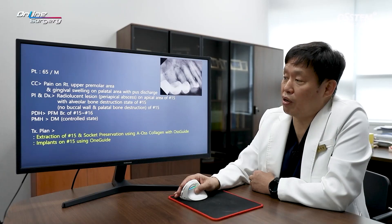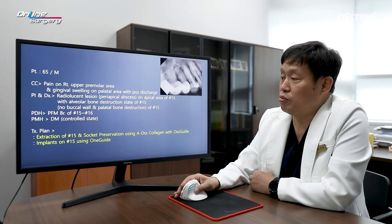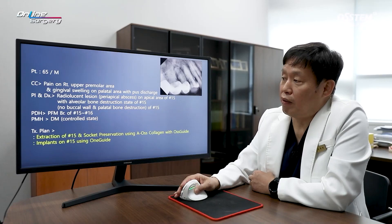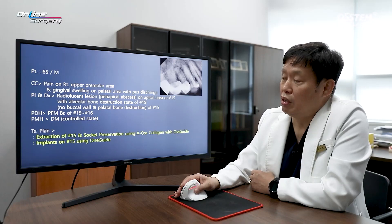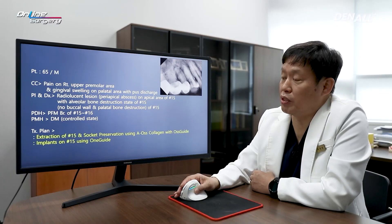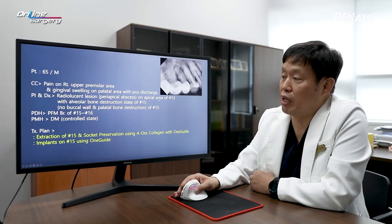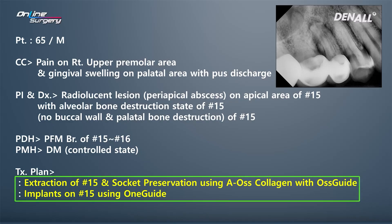For number 15 and 16, I removed the bridge. In the case of number 25, immediate implant placement was done and Sure-OS graft was used for socket graft. In this case, the buccal wall was completely destroyed, therefore A-OS collagen and OsGuide was used for socket preservation. For number 15, implant placement was to be done using OneGuide.